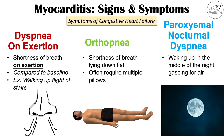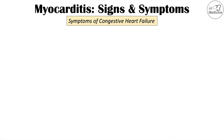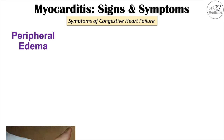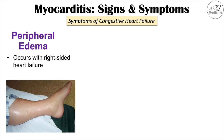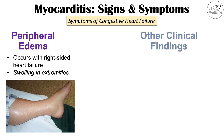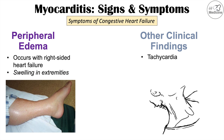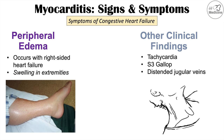Other symptoms of congestive heart failure that can occur with myocarditis include peripheral edema, which occurs if the right side of the heart is affected. If the right heart cannot accept blood from the body effectively, fluid accumulates in the extremities, especially the lower extremities. Additional clinical findings include tachycardia, an S3 gallop, and distended jugular veins, which can also be a sign of heart failure.